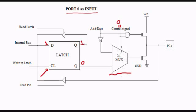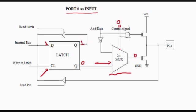When the control signal is 0, it allows this signal to pass through the MUX. As the control signal is 0, it allows the output of the latch to pass through, which is 0. And we get 0 here. The control signal is 0, and 0 ANDed with anything is 0 again, so we get 0 here also.